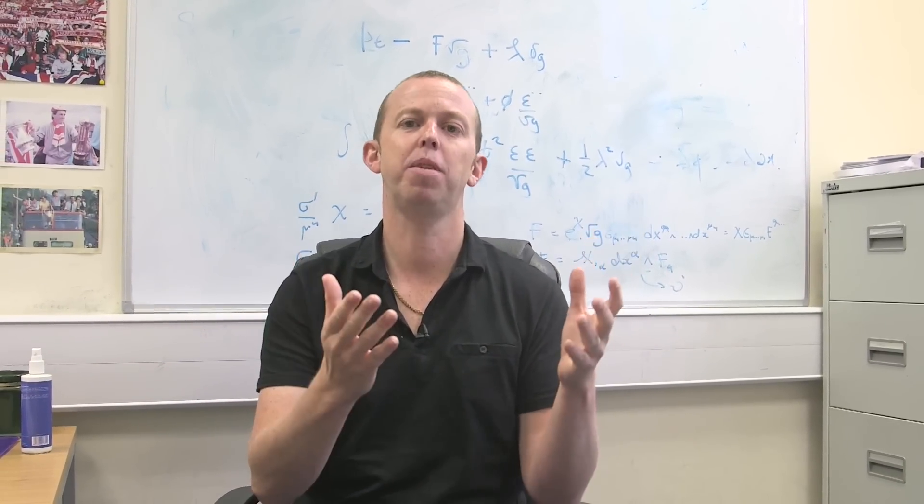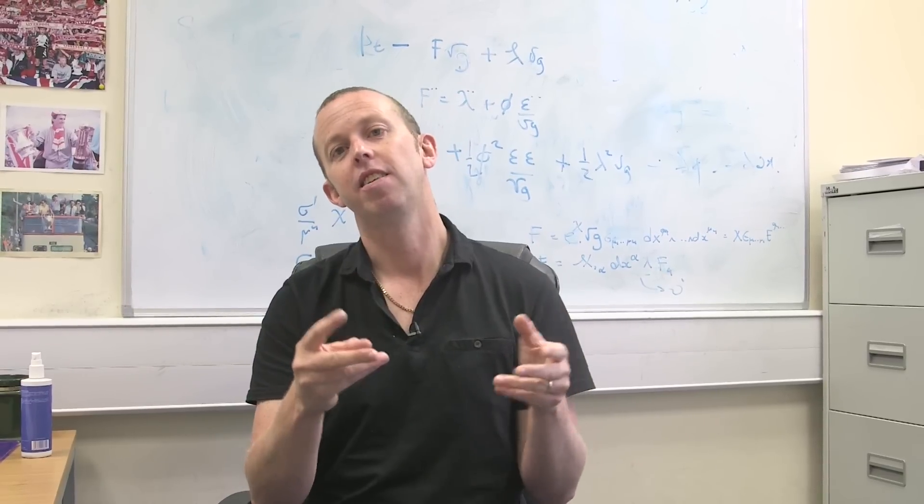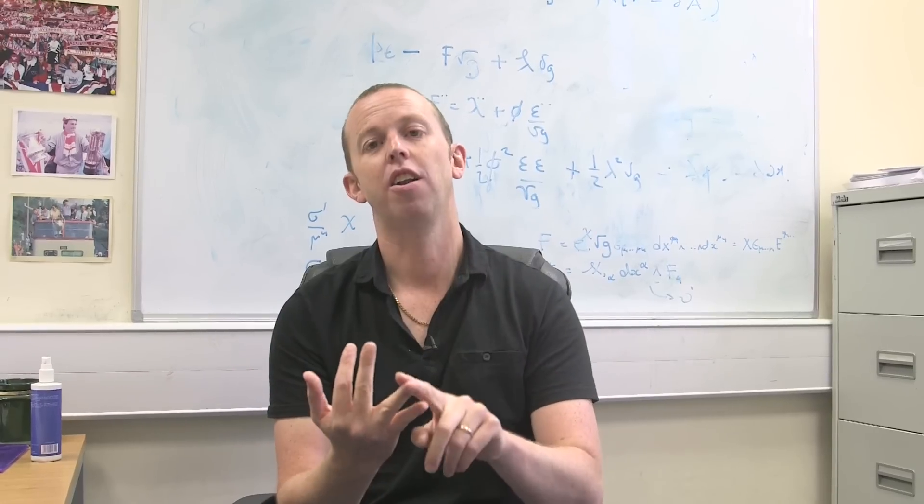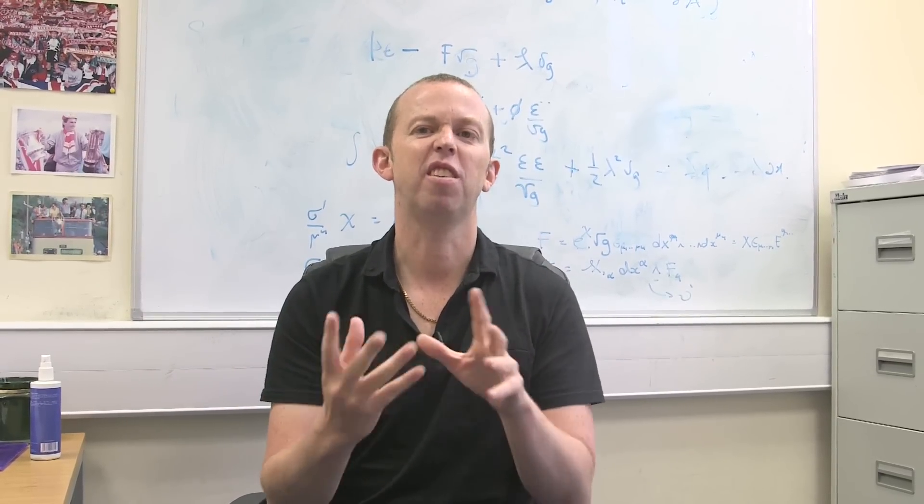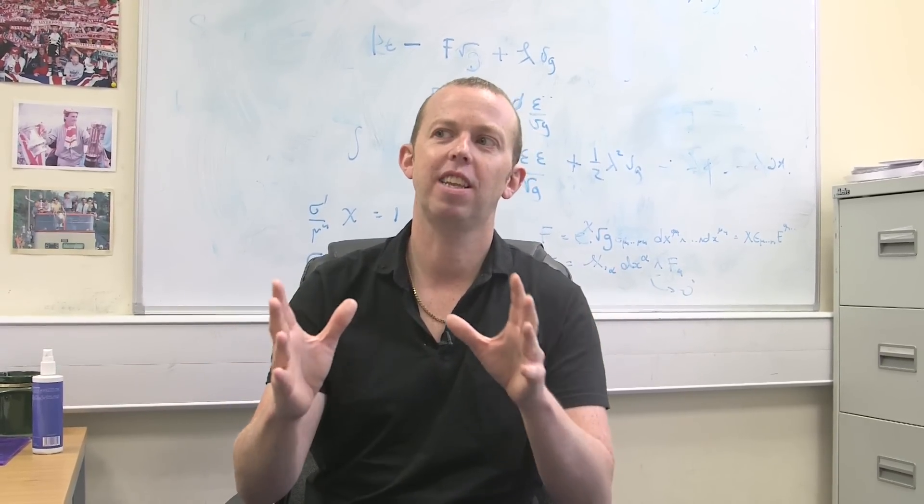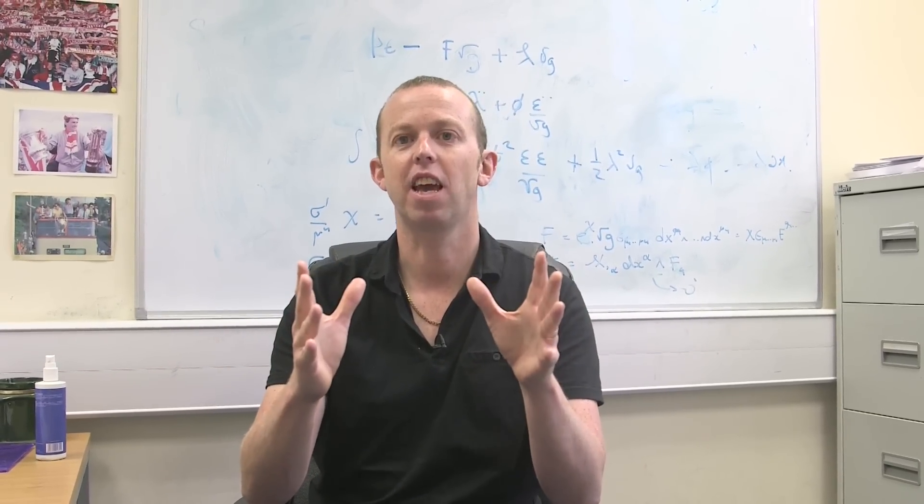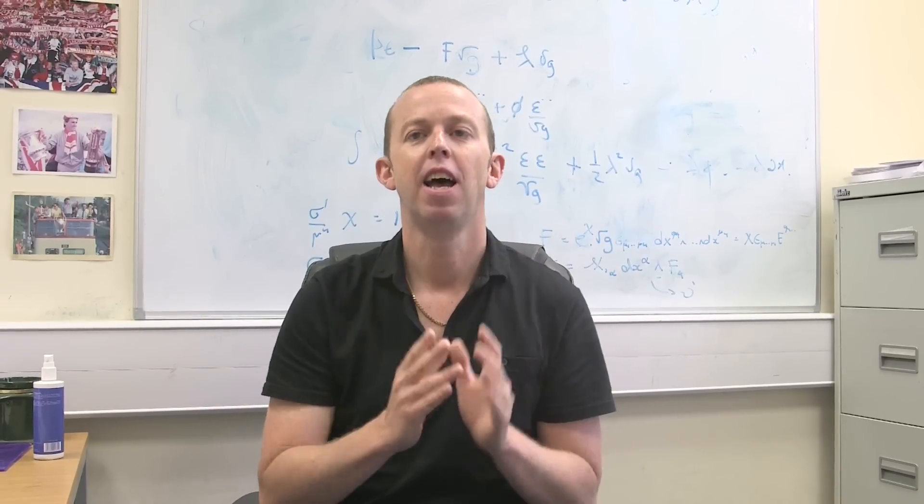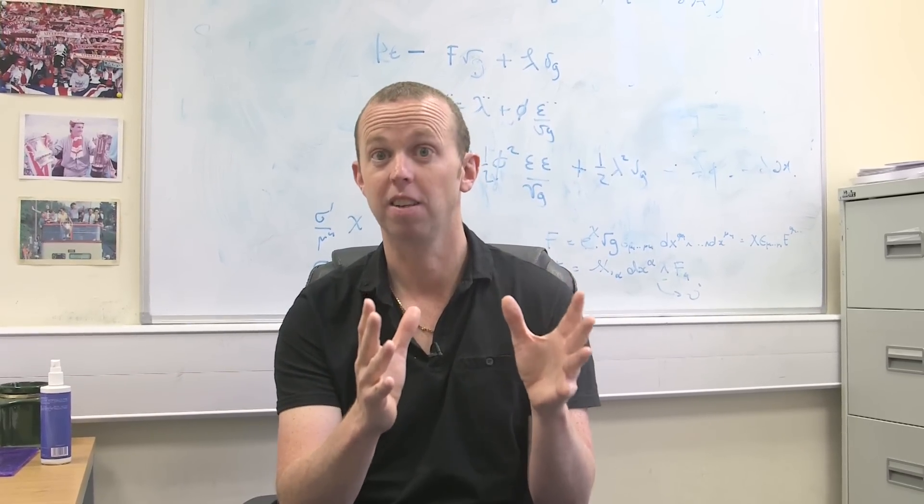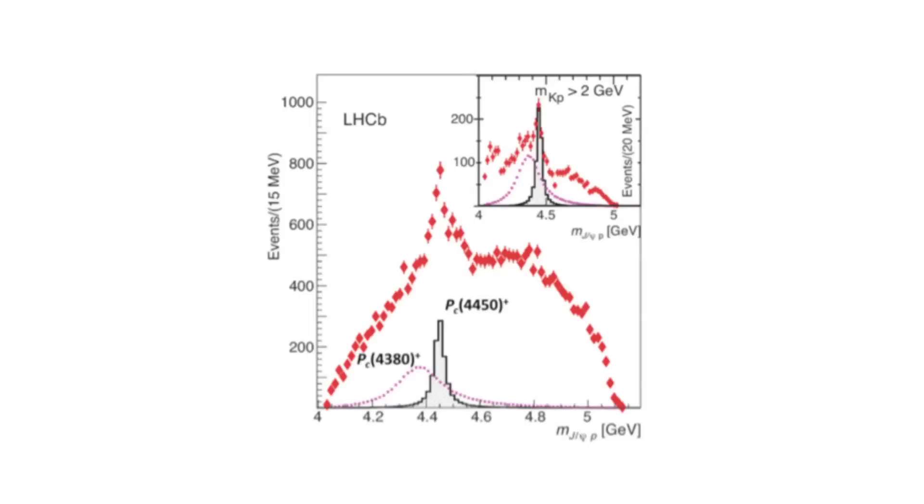And this lambda B guy then decayed into a proton, a kaon, and something called a j-psi, which is like a meson made up of charm quarks. What they noticed was that there was a resonance in this decay process. There was a little bump. And that bump you would normally associate with a particle. And it was a particle whose mass was about four and a half times the mass of the proton.